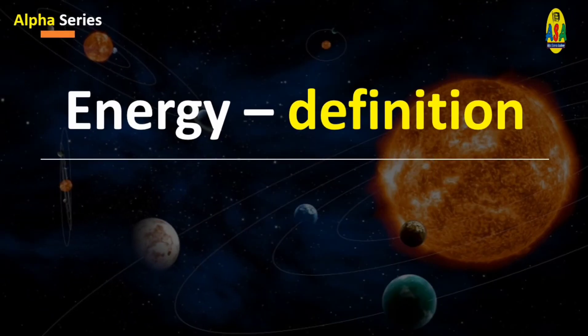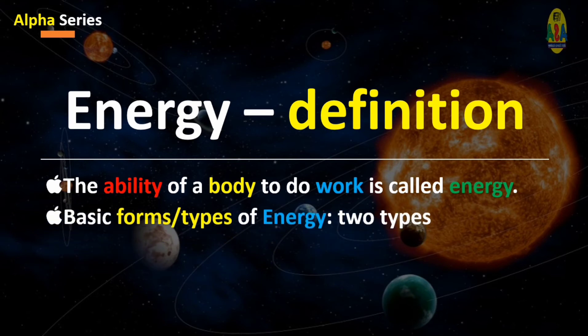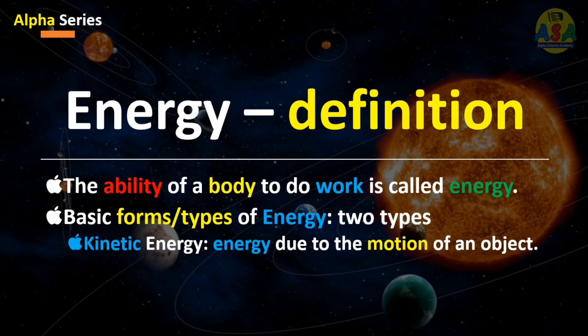According to one of the definitions, the ability of a body to do work is called energy. There are some basic forms or types of energy and there are two types: number one, kinetic energy,